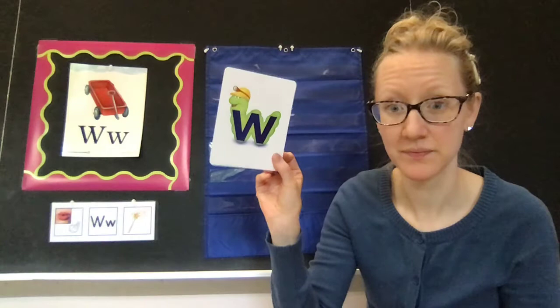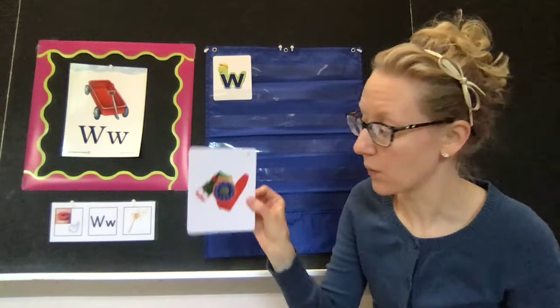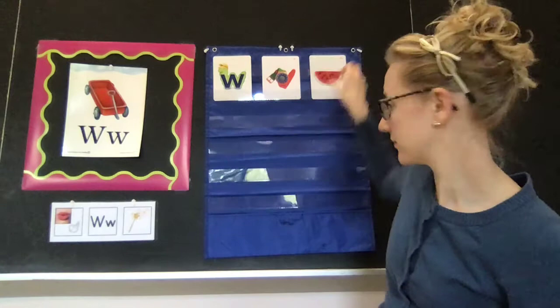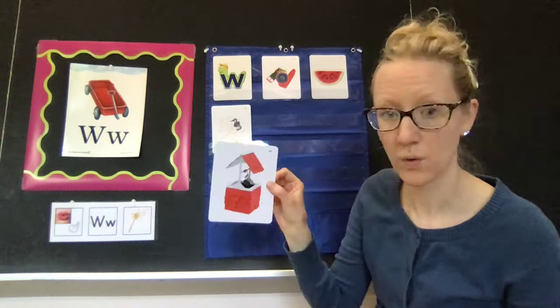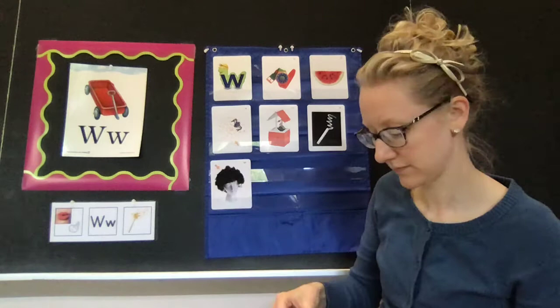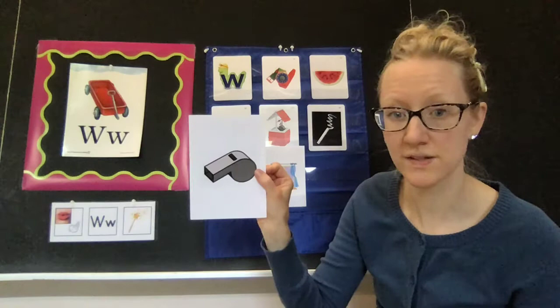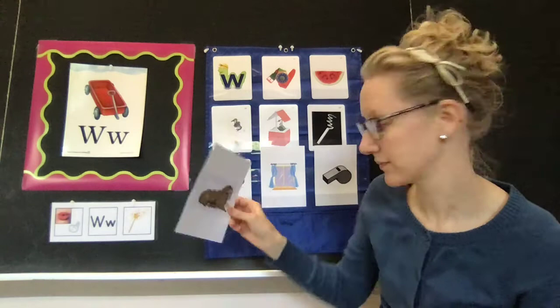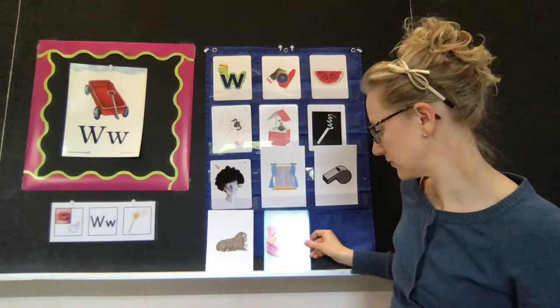Our alpha friend for this week is Willie Worm. And a few pictures I have that start with the sound for W: watch, watermelon, web, well, white, wig, window, whistle, walrus, waffle, and whale.